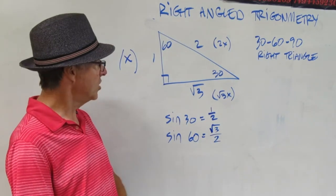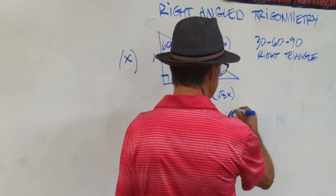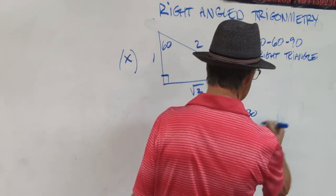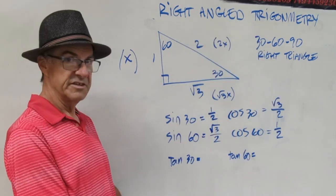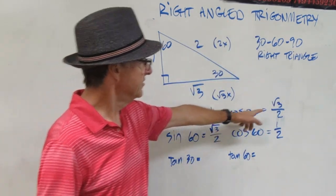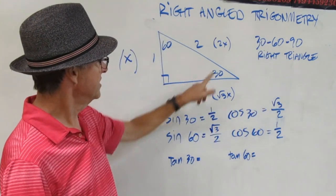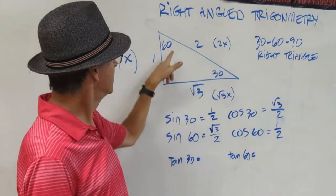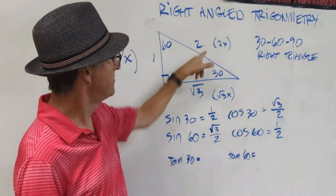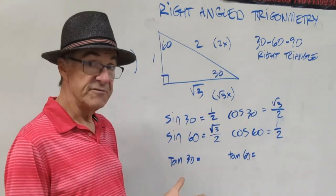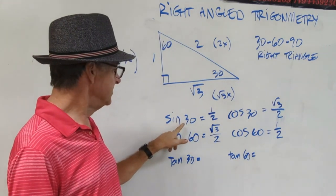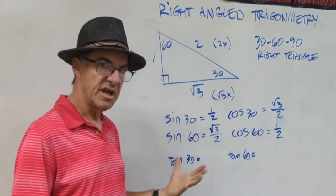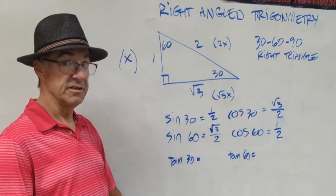Now let's do cosine 30 and cosine 60. Pause the video and write down the ratios for these two. Cosine 30 is root 3 over 2, because cosine is adjacent over hypotenuse. And for cosine 60, it's one half — adjacent over hypotenuse, that's 1 over 2. You may have noticed that sine of 30 is the same as the cosine of 60 — that's a nice thing to know and we'll capitalize on that later.